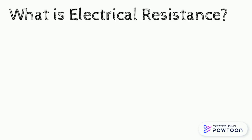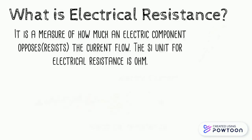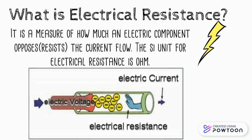What is electrical resistance? It is a measure of how much an electric component opposes or resists the current flow. The SI unit for electrical resistance is Ohm.